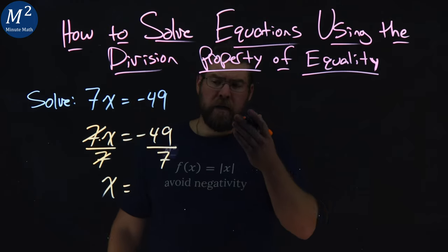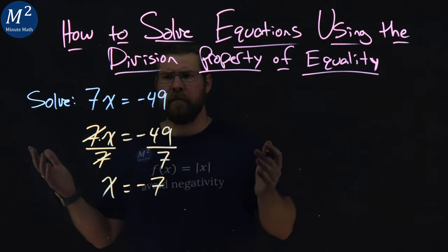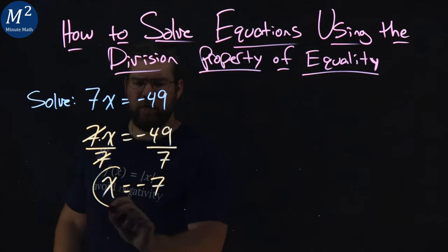Now, negative 49 divided by 7 is negative 7. x is by itself, and we have our answer.